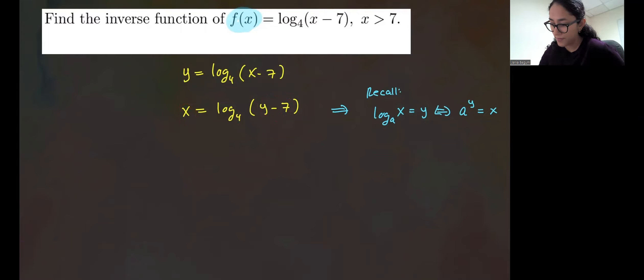So we're going to do the following. We're going to write this as 4. So this is equivalent to 4 to the power of x is equal to y minus 7.